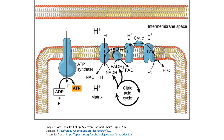As the electron transport chain continues to work, the number of hydrogen ions within the intermembrane space will continue to rise. Proportionally, the number of hydrogen ions within the matrix will become less. Additionally, hydrogen ions have a positive charge. This results in the intermembrane space having a slight positive charge and the matrix having a slight negative charge.